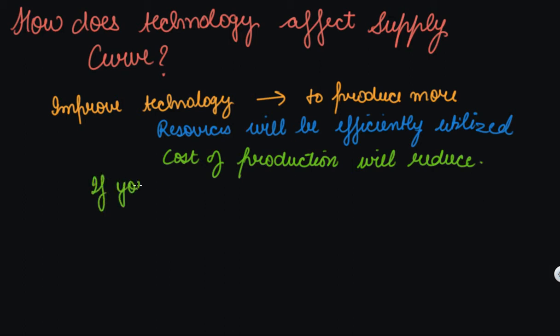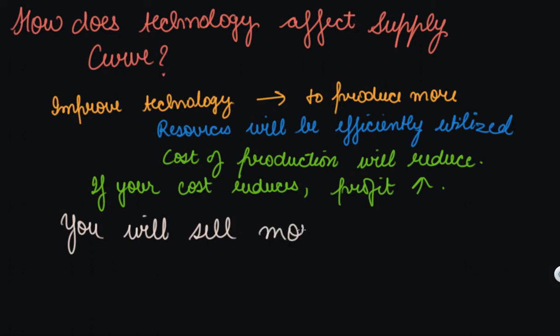So as a producer, what will you do? You will sell more. So quantity supply will increase. There will be a rightward shift of the curve.